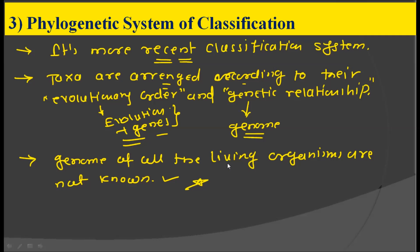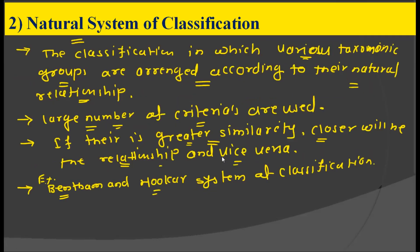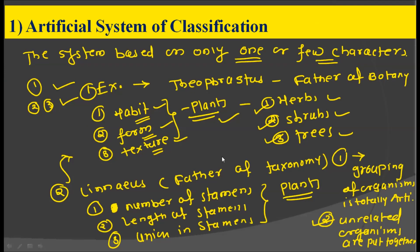In summary, we have seen three systems of classification. First, the artificial system — based on only one or few characters. Theophrastus divided plants into three groups using habit, form, and texture, classifying them as herbs, shrubs, and trees. Linnaeus used the number of stamens, length of stamens, and union in stamens. The drawbacks are that grouping is totally artificial and unrelated organisms are placed in one group.